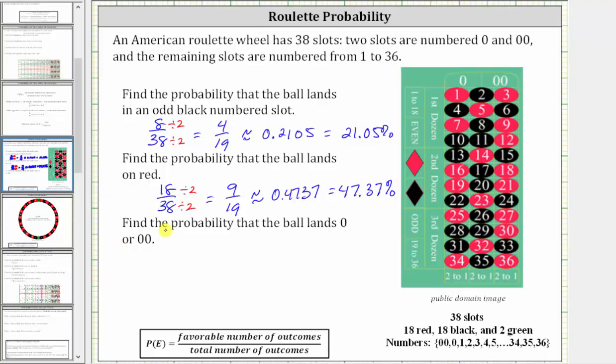The last question is find the probability that the ball lands on zero or double zero. So there are two favorable outcomes, either a zero or a double zero out of a total of 38 outcomes, and therefore the probability is 2/38ths, which after simplifying is equal to 1/19th.